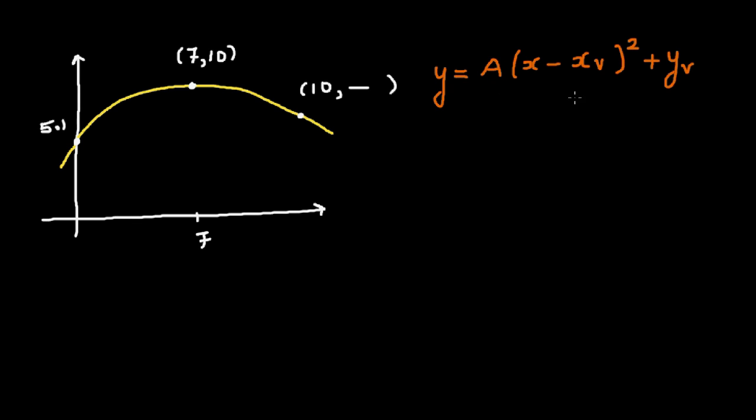I'll explain what this means. A is a number which we have to find. Now xv, I mean by xv is the x coordinate of the vertex. V stands for vertex, x coordinate of vertex.